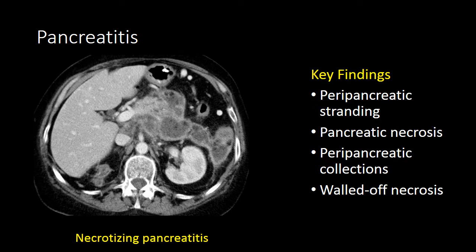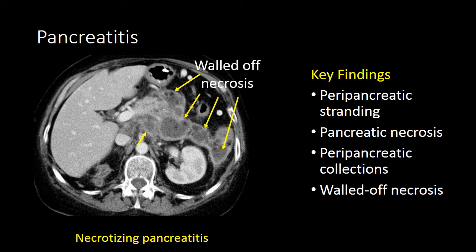Necrotizing pancreatitis is a more severe form of pancreatitis. The inflammation from the acute pancreatitis has resulted in necrosis of the pancreatic parenchyma and the development of multiple fluid collections around the pancreas and where the pancreas used to be. In this case, we can see multiple areas of necrosis with thick enhancing rims, commonly referred to as walled-off necrosis.